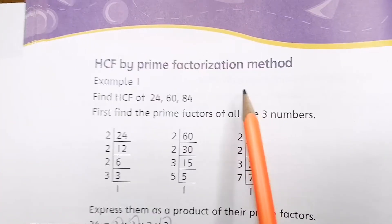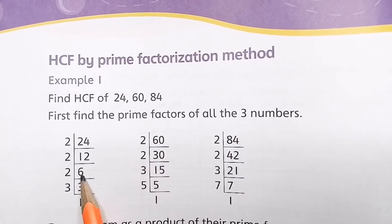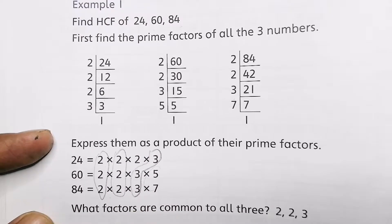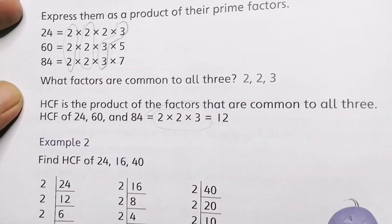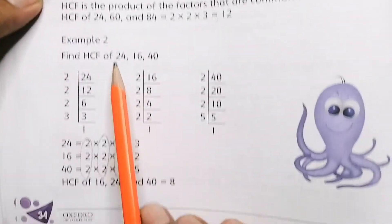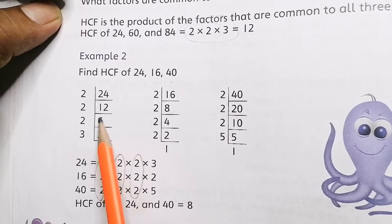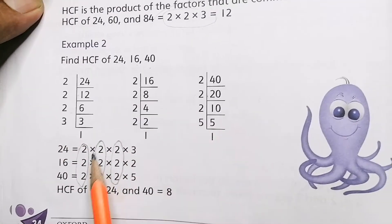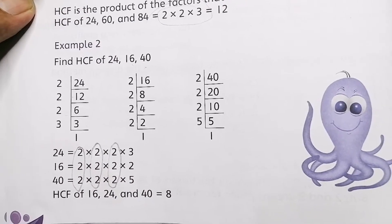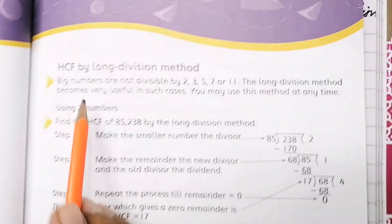First, we will solve HCF by prime factorization method. Suppose three numbers are given. We take their prime factors separately, we divide them separately, and we find the common numbers and multiply them. The product of the common numbers is the HCF. Similarly, in Example 2, three numbers are given. We take their prime factors separately and take only the common factors. Those common factors are multiplied, and the product is called the HCF of the given numbers.